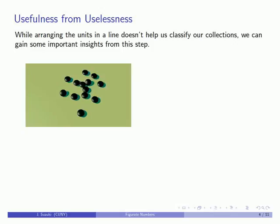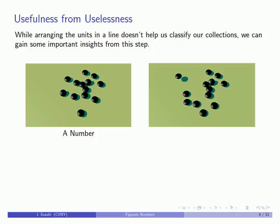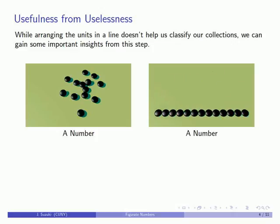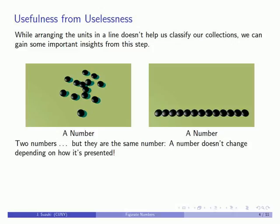So here we have our jumbled collection of units, which is a number. And then we took these units and arranged them in a straight line, and we formed a number. And these are two numbers, but they're the same number. And so the observation that we might make here is that a number doesn't change based on how it's presented.